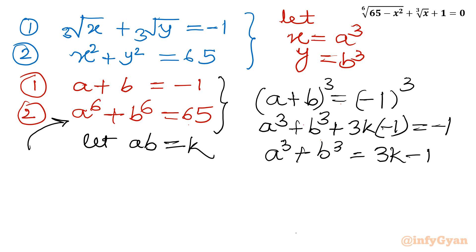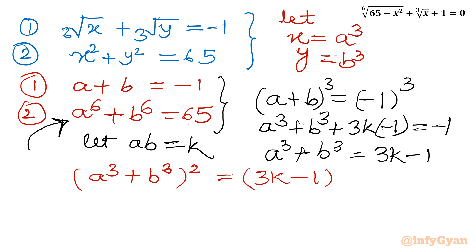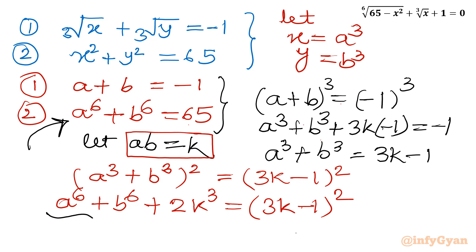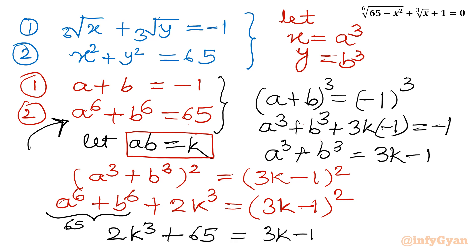Now I have to achieve a to the power 6 plus b to the power 6. So I will consider squaring of the equation a cubed plus b cubed equals 3K minus 1. Squaring both sides: a to the power 6 plus b to the power 6 plus 2·(ab)³ equals (3K minus 1) squared. Since ab equals K, we have a³b³ equals K cubed. So a⁶ plus b⁶ plus 2K³ equals (3K minus 1) squared. Substituting a⁶ plus b⁶ equals 65, we get: 2K³ plus 65 equals (3K minus 1) squared.